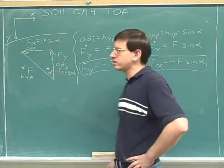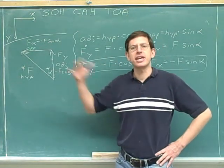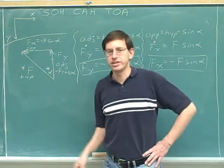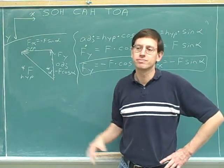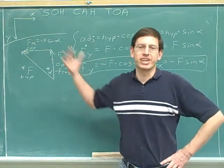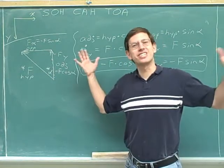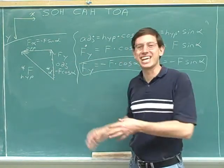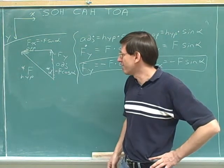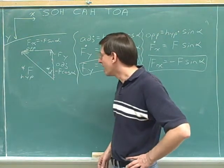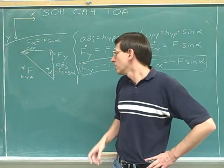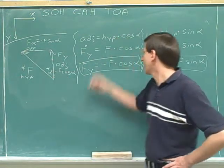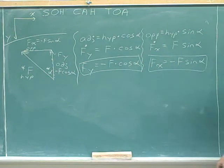You might have noticed that in most of the previous problems I've been using theta for the angle, and here I decided to use alpha. What was the significance of changing from theta to alpha? There was no significance to it. Obviously, it doesn't matter what name we give to the angle as long as we're consistent. Once we've decided to call this alpha, we have to use that same name throughout the whole problem.